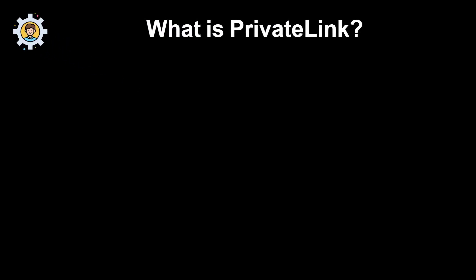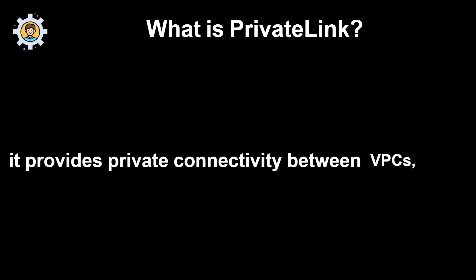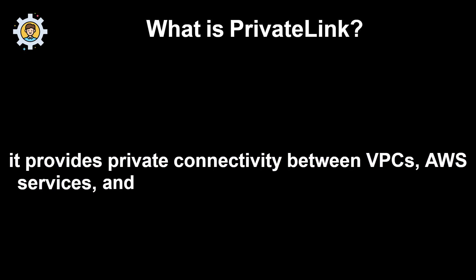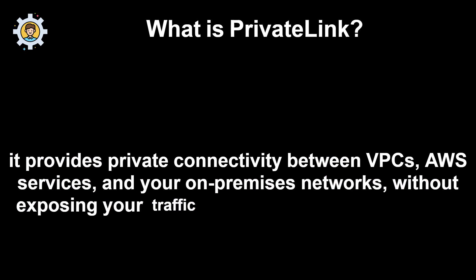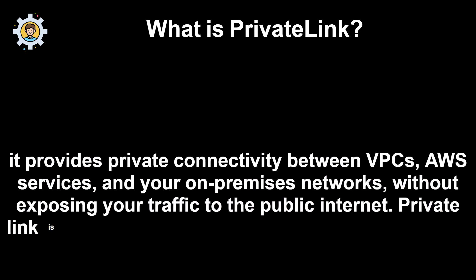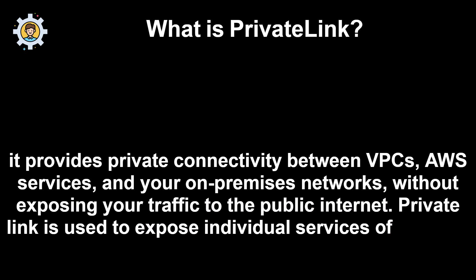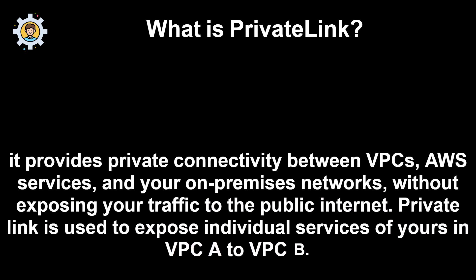What is PrivateLink? It provides private connectivity between VPCs, AWS services, and your on-premises networks, without exposing your traffic to the public internet. PrivateLink is used to expose individual services of yours in VPC A to VPC B.